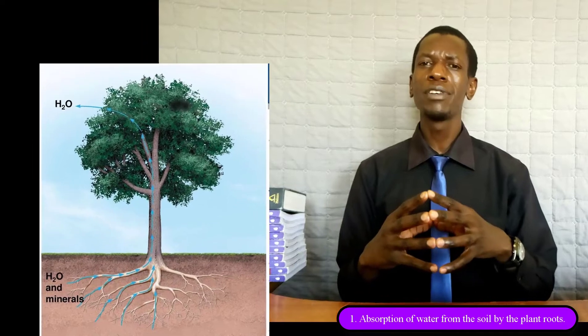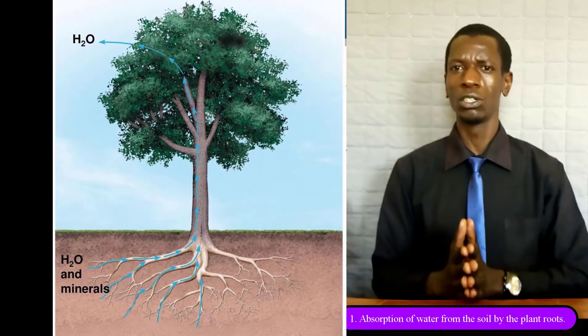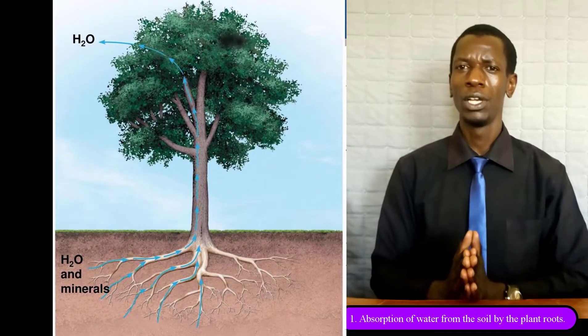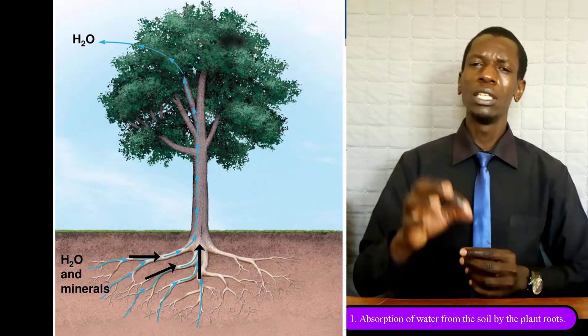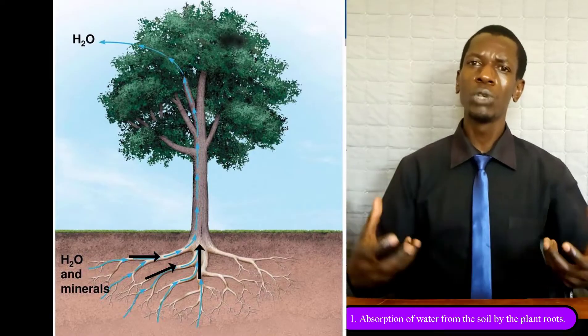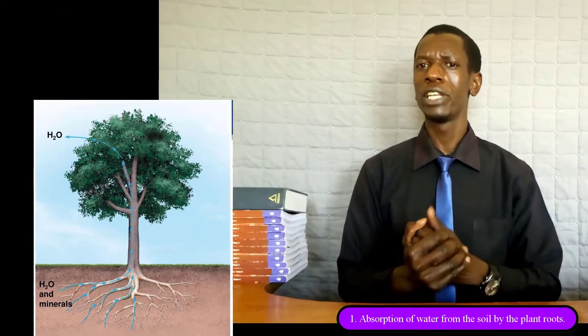Plants always acquire every material from where they are growing. When they need water, the roots will just absorb it from the soil, and that is through the process of osmosis. That is the first role of osmosis. The second role is feeding in insectivorous plants.